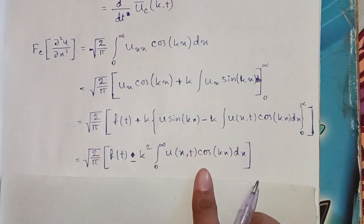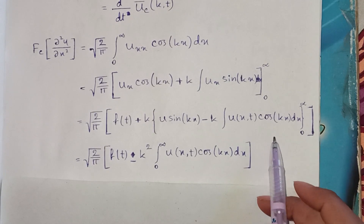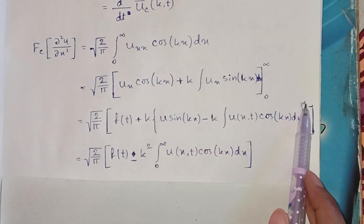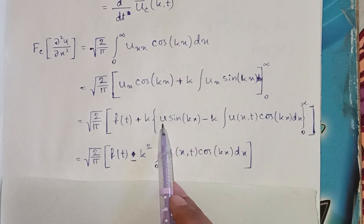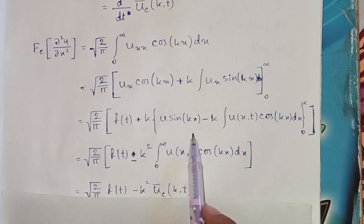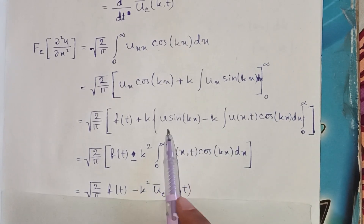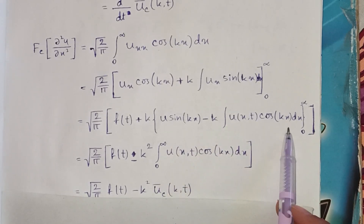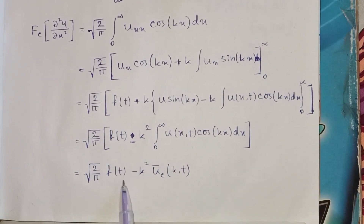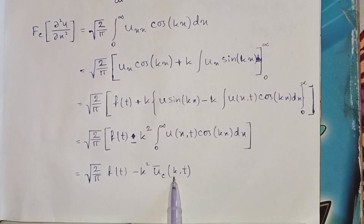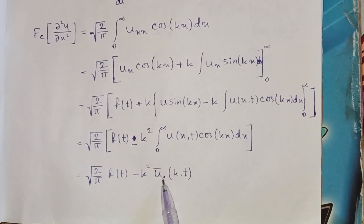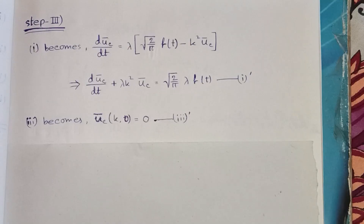Applying this, we get the result: when the limit x → ∞, u → 0, and when x = 0 the sin(kx) becomes zero, so both terms become zero and only the main part remains. It reduces to √(2/π) · f(t) minus k² · ū_c(k, t), because that term together with √(2/π) becomes ū_c(k, t).